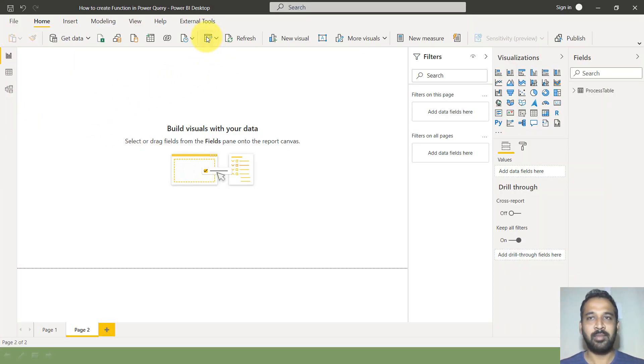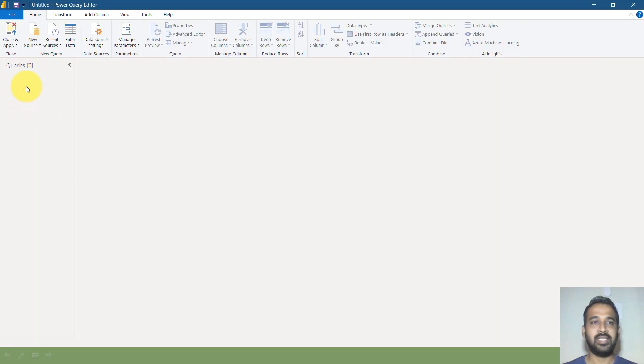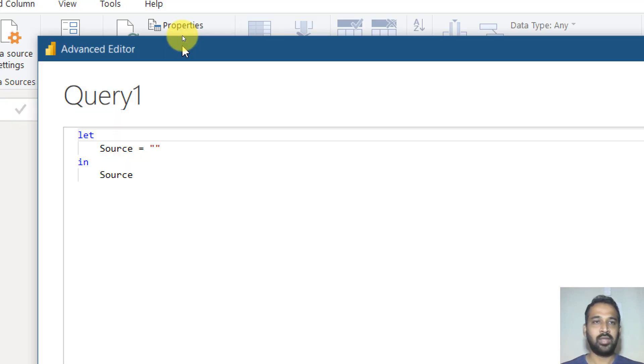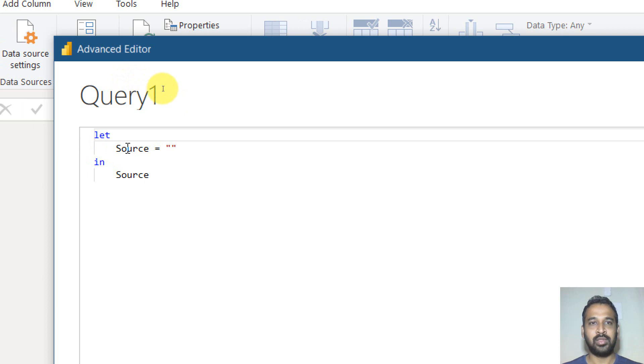So this is my Power BI desktop and I'm going to Power Query editor. As nothing is here, you can just right click here and add new query and add a blank query. So now click on the advanced editor. Once you click on that, a new window will open.